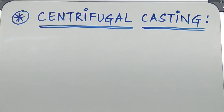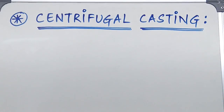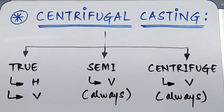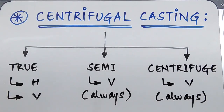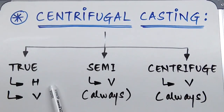Welcome to another exciting lecture of Make Easy. Today's topic is centrifugal casting. There are three types: true centrifugal casting, semi-centrifugal casting, and centrifuge casting. The true centrifugal casting has two subdivisions: horizontal axis and vertical axis.